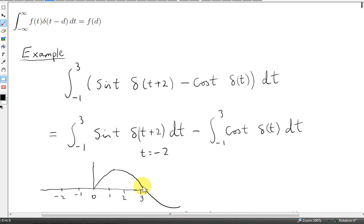Because the delta function is 0 for values of t from minus 1 to 3. Here's a rough sketch of sine of t. Delta of t plus 2 is a delta function located at minus 2. So the delta function is 0 everywhere other than at t equals minus 2. So we have 0 times sine of t, which is 0.